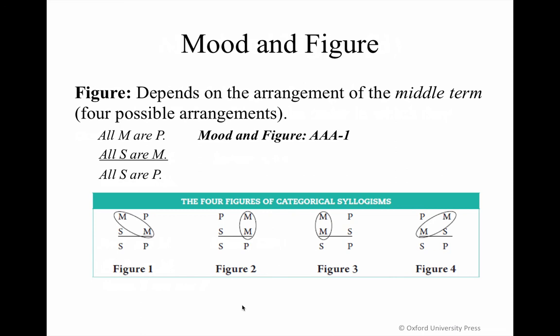Figure one reflects an argument whose middle term is in the subject position of the major premise and the predicate position of the minor premise. Figure two reflects an argument whose middle term is in the predicate position of both the major and minor premises. Figure three reflects an argument whose middle term is in the subject position of both the major and minor premises. Figure four reflects an argument whose middle term is in the predicate position of the major premise and the subject position of the minor premise.